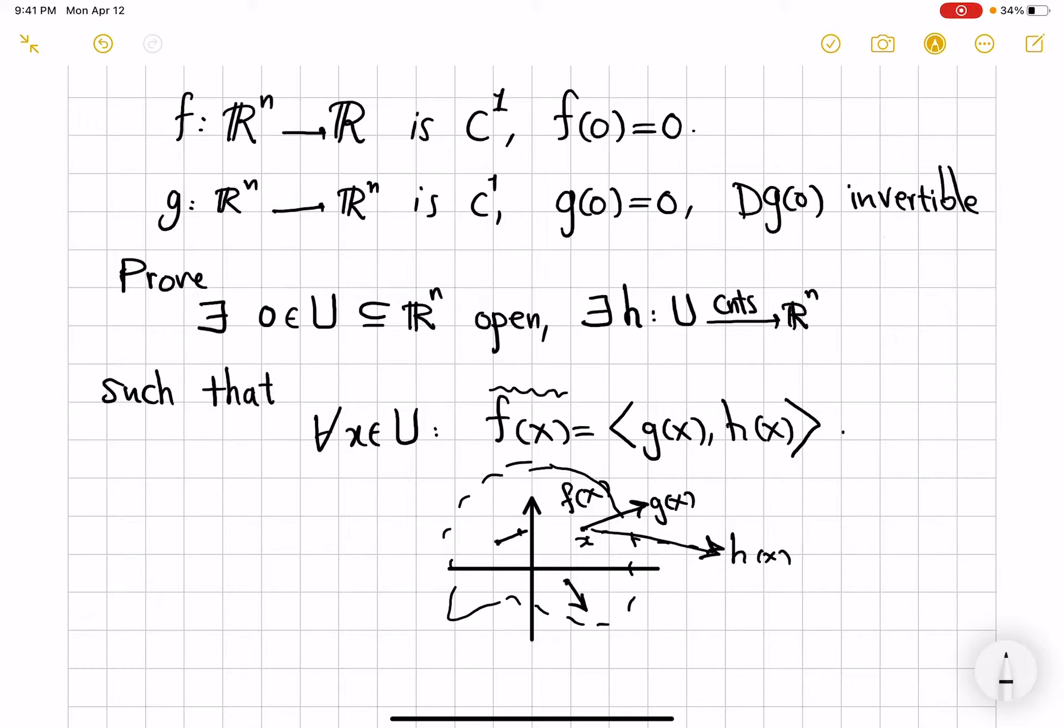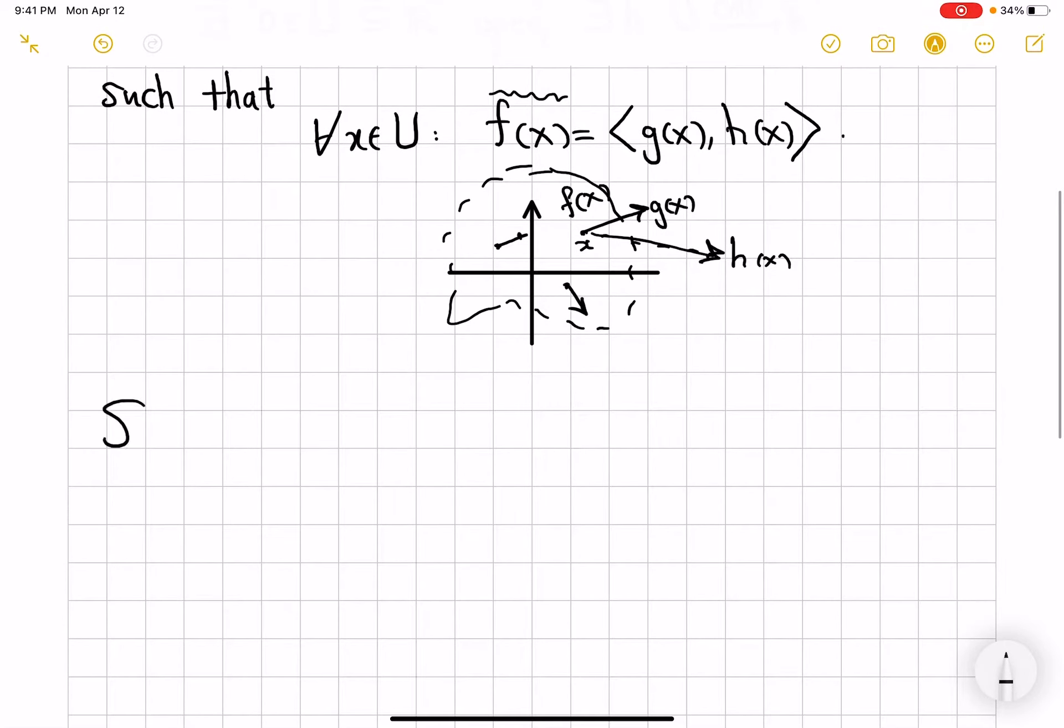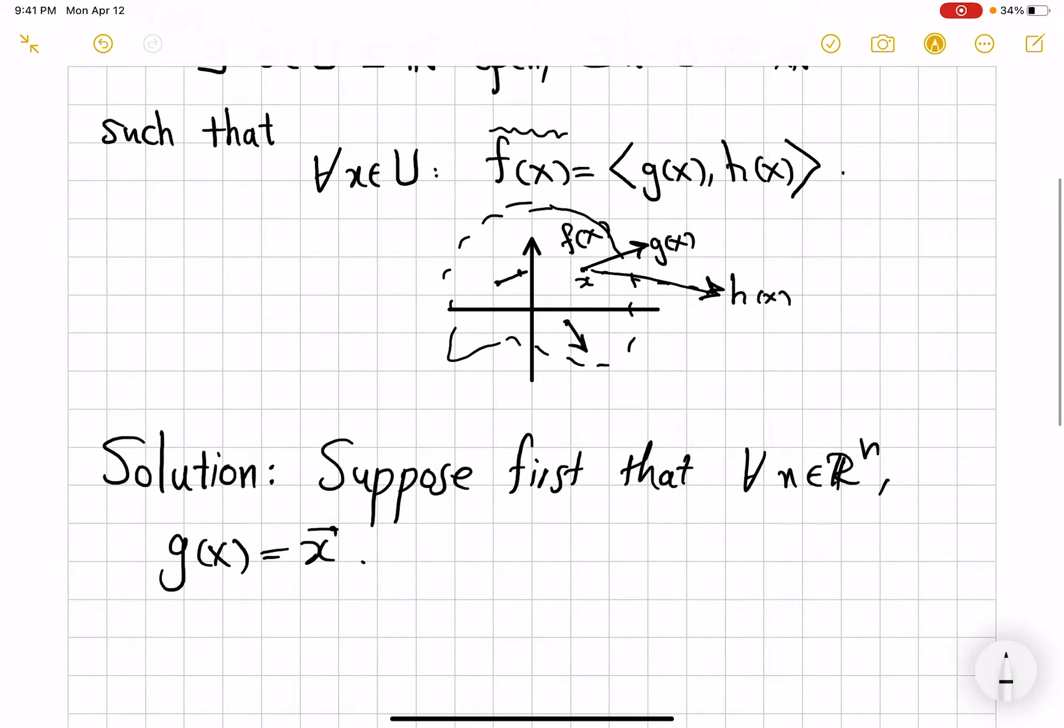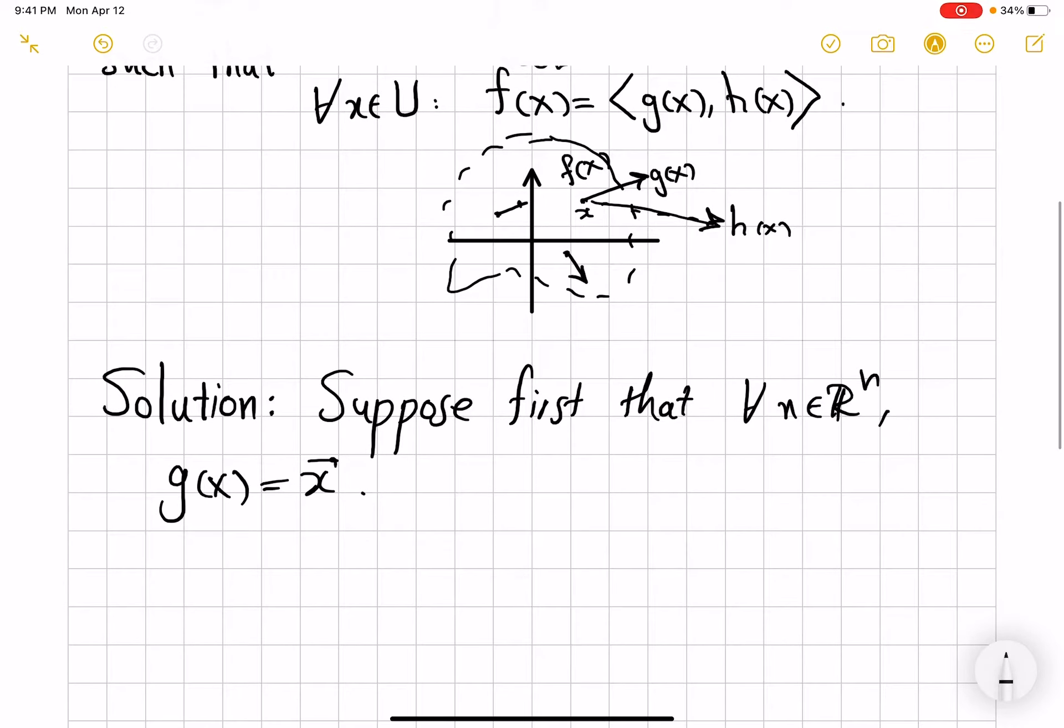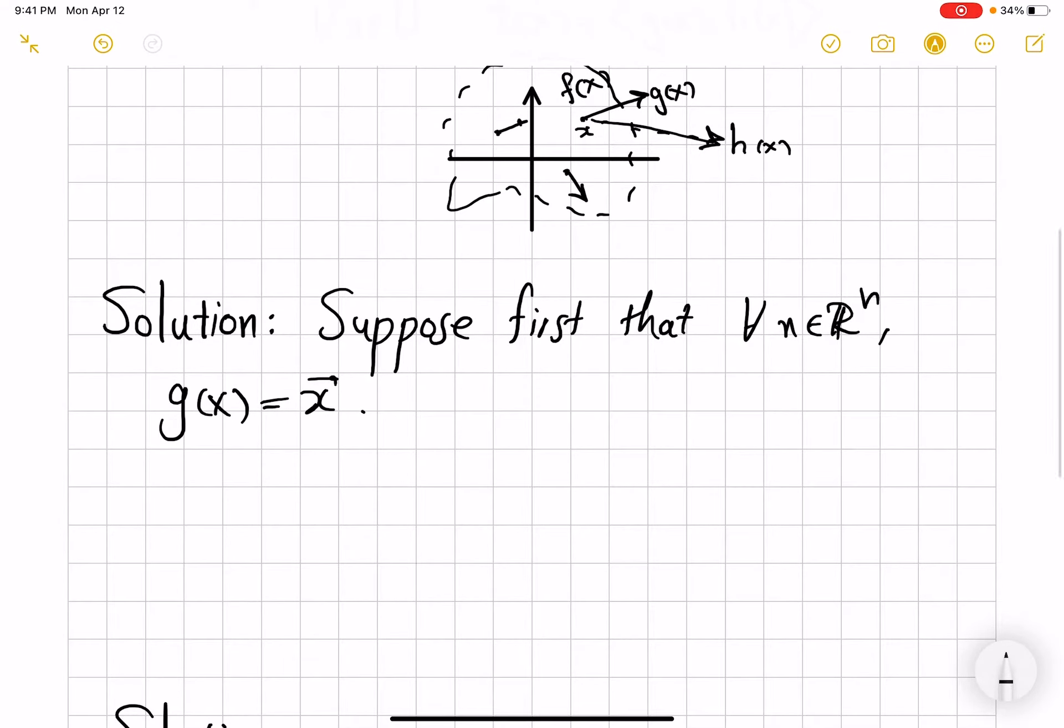So how do we go about proving such a claim? I'm going to do it in two steps, which in their own are not really easy. So suppose first that for every x in ℝⁿ, g of x, my vector field, is just identity, which is by no means without loss of generality at all. But you will see how it's an important step in the proof.